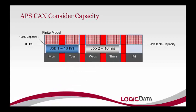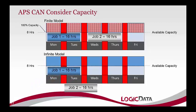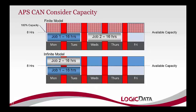With an infinite model, taking the same two jobs, APS loads job one on Monday and Tuesday, then loads job two on top of job one on the same two days — booking that work center at 200% of capacity. There are advantages to this: if you have flexible capacity, you look at the chart and say, I need another person that day, or I need to run an extra shift. An infinite model is good if you're driven by customer due dates no matter what and will make your shop work the extra time to get products done.